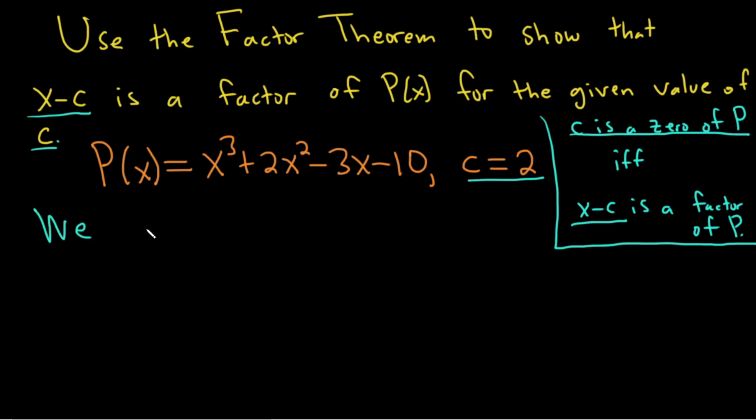So we need to show, let me just write that down to be really clear: x minus 2 is a factor of P. To do that, we just have to show that 2 is a 0.